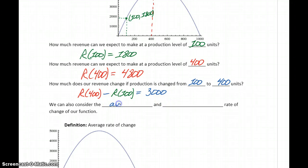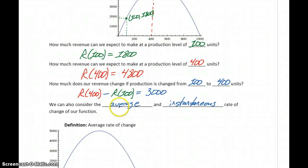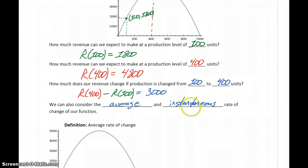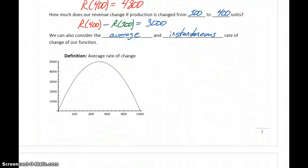We can also consider the average and instantaneous rate of change of our function. When we talk about average rate of change, we're talking about the idea of over some interval — between two X values — what's happening to the rate of change of our function. For instantaneous rate of change, what we're talking about is what's happening to our function at an exact instant. We'll go into a little more detail on that in just a minute.